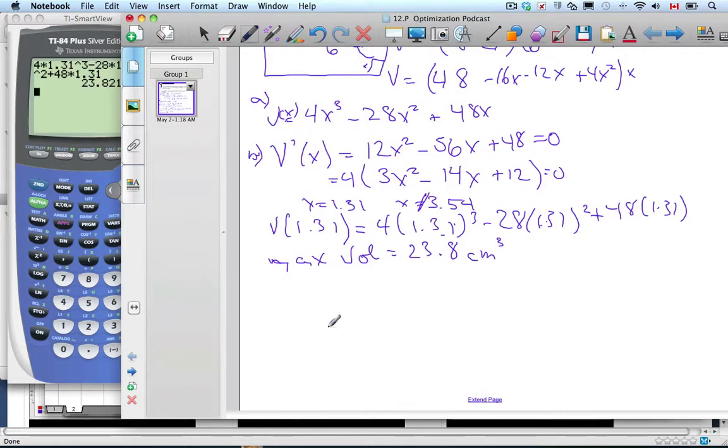So the dimensions of the box, that's what it originally had asked. The length is going to be 8 minus 2 times 1.31, the width will be 6 minus 2 times 1.31, and the height is just 1.31.